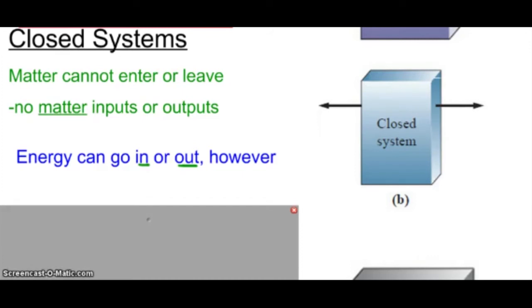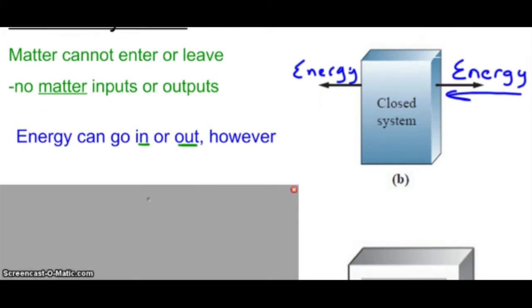And for our diagram, a closed system, energy can go in, and energy can come out, and that is all. Okay, so that's a closed system.